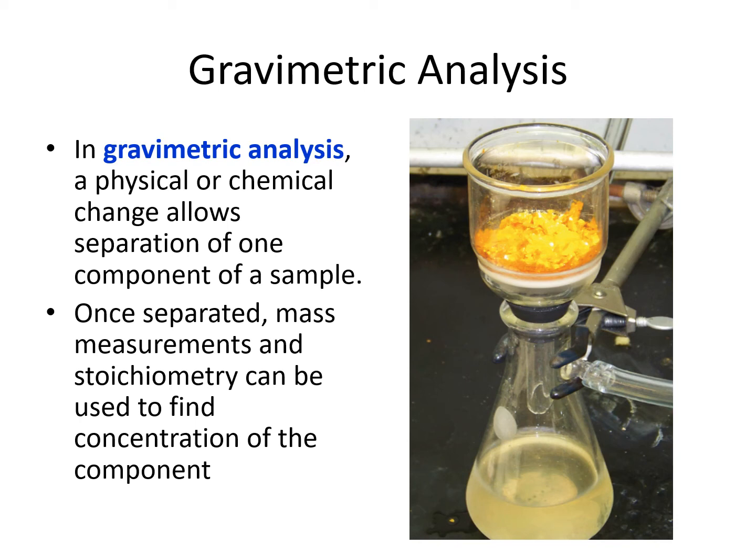Our second lab technique related to stoichiometry is gravimetric analysis. In gravimetric analysis, we're using masses of some component of either a mixture or a compound, and we're separating them out and weighing them. From those masses, we can use stoichiometry to find some unknown component.